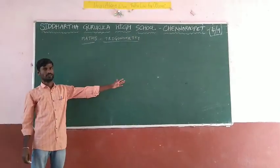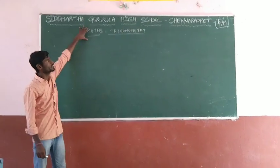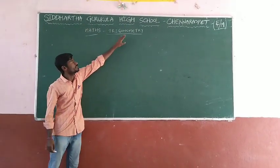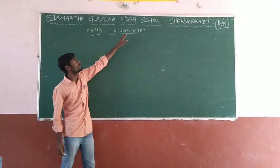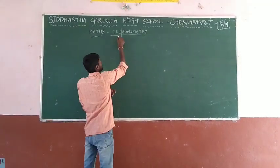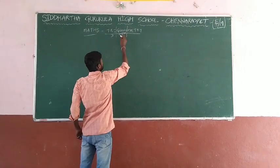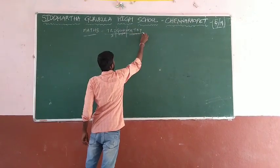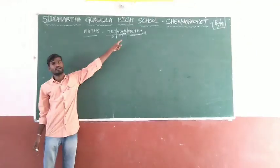Hi students, hi everyone. Today we are going to discuss the trigonometry topic in mathematics. The name itself tells us the meaning: 'tri' means three, 'gono' means angles, and 'metry' means measurements. So three angle measurements is simply called trigonometry.